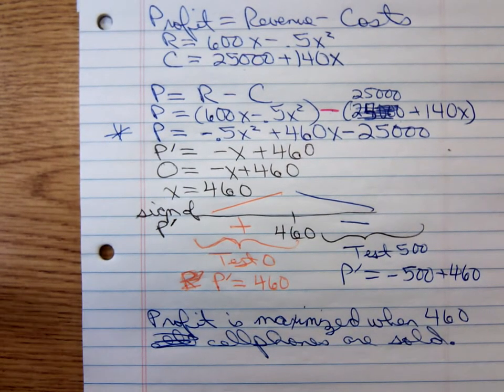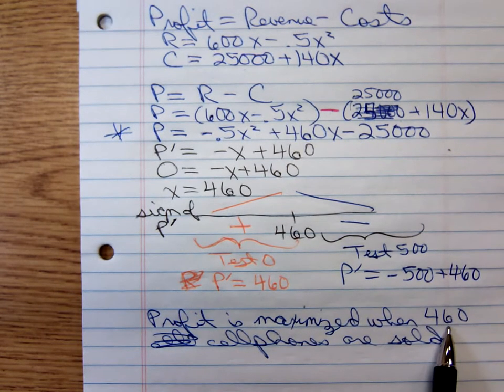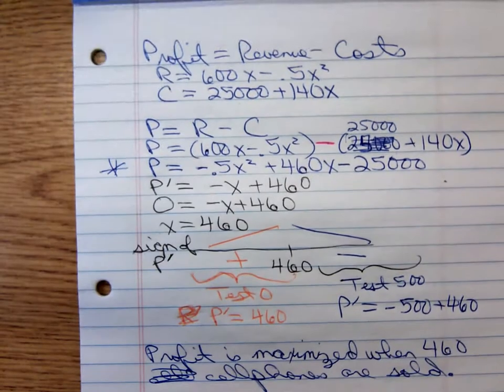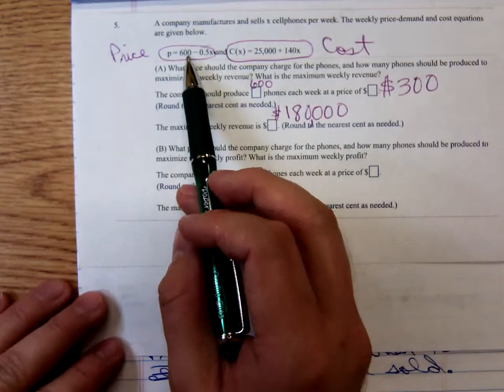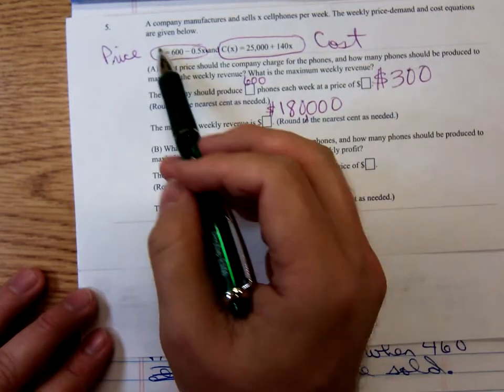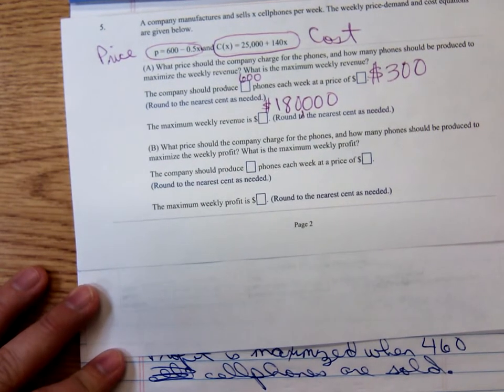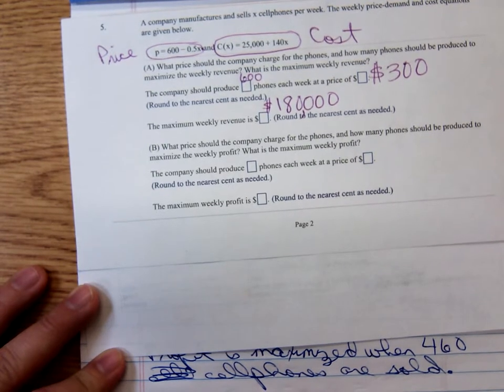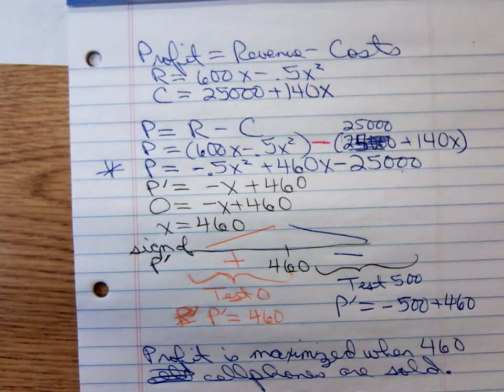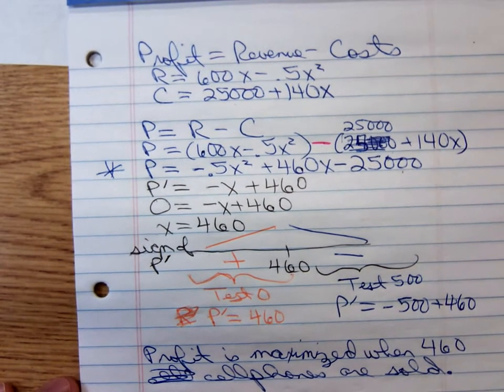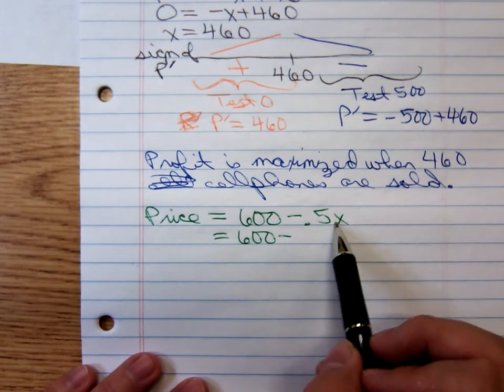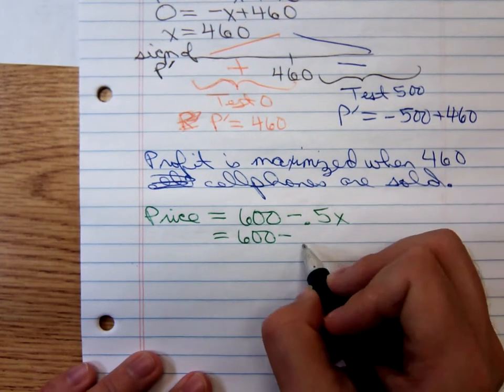They then want to know the selling price. They're selling 460 cell phones. What's the selling price? That's when you have to go back to the original problem. Remember the original problem that gave us that price function. We know, and I'm going to write this out, price equals, I'm not going to write the p because I don't want you to think that's saying profit, 600 minus 0.5x. So plugging in the 460 for x, 600 minus, oh, I'm getting way down, I'm way down too low on it.